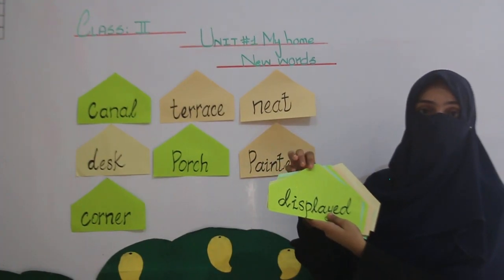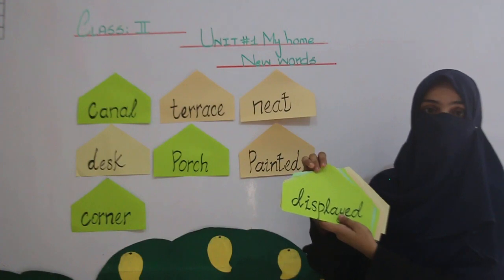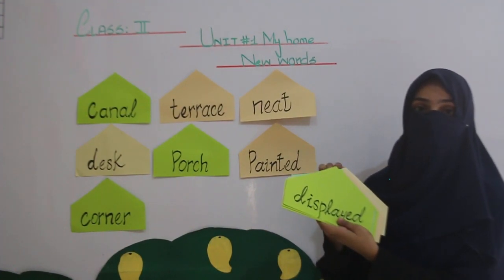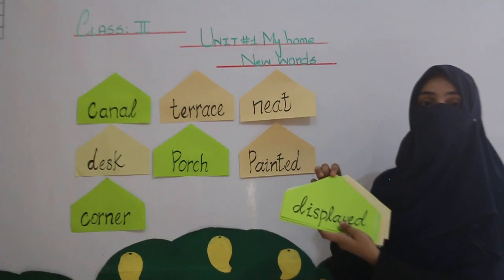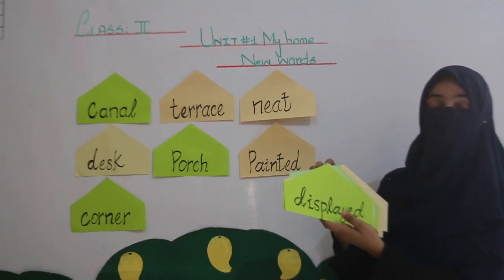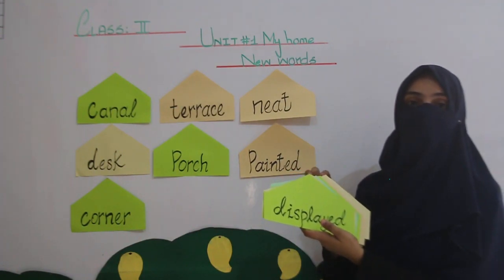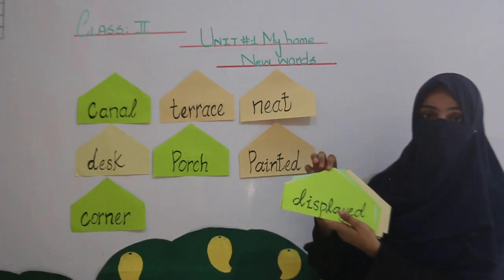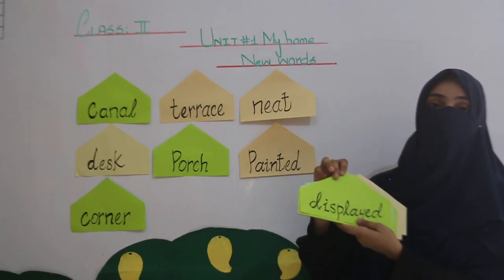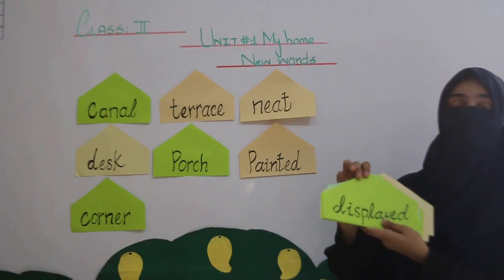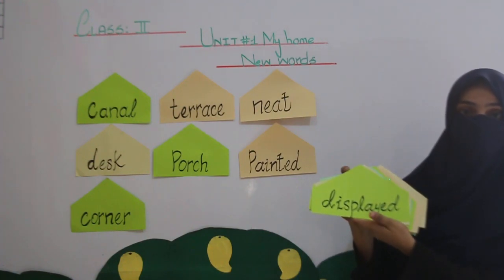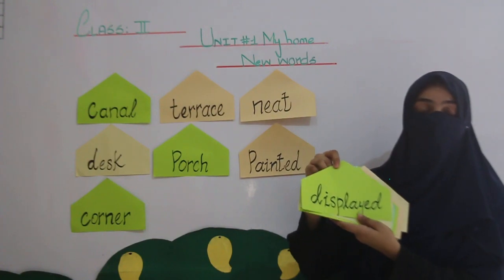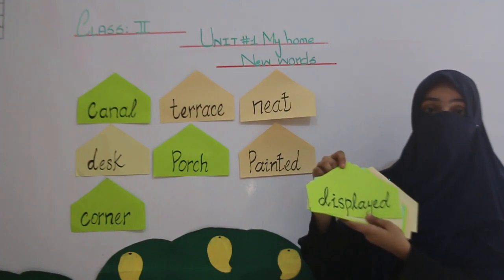Display, D-I-S-P-L-A-Y-E-D. I am repeating this word again — you have to read it with the correct pronunciation. Display, D-I-S-P-L-A-Y-E-D. And the meaning of this word — like I am showing you these flashcards, it is Display. I am displaying to you. So the word is Display.